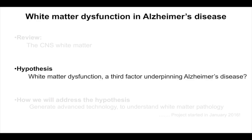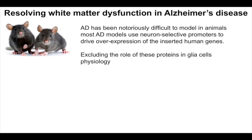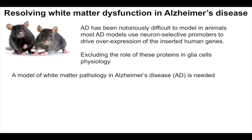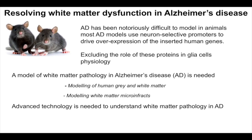Our hypothesis is whether white matter lesions may be an underlying factor of Alzheimer's disease, and whether Alzheimer's patients are more susceptible to changes in blood flow. To address this we need tools to mimic this, but mouse models haven't been great — they overexpress human genes under neuronal promoters, excluding glial cell effects. So we chose to model this in human tissue culture to get closer to reality.